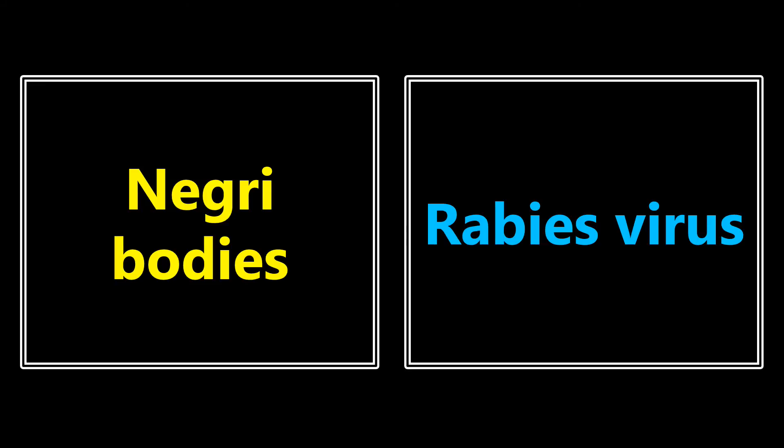Negri bodies — I've talked about this in the high-yield images videos — refer to the rabies virus. They might give you a picture of it. It's a little low yield because it's pretty tough, but if they ever mention Negri bodies, you definitely want to be thinking about rabies virus. Also remember, if they mention bats, think rabies virus as well.